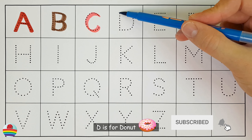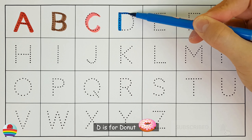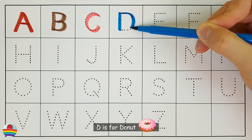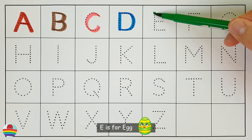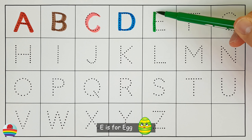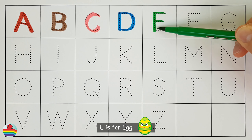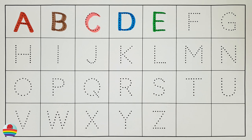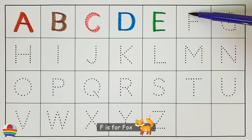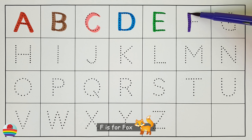D. D is for donut. D. E. E is for egg. E. F. F is for fox. F.